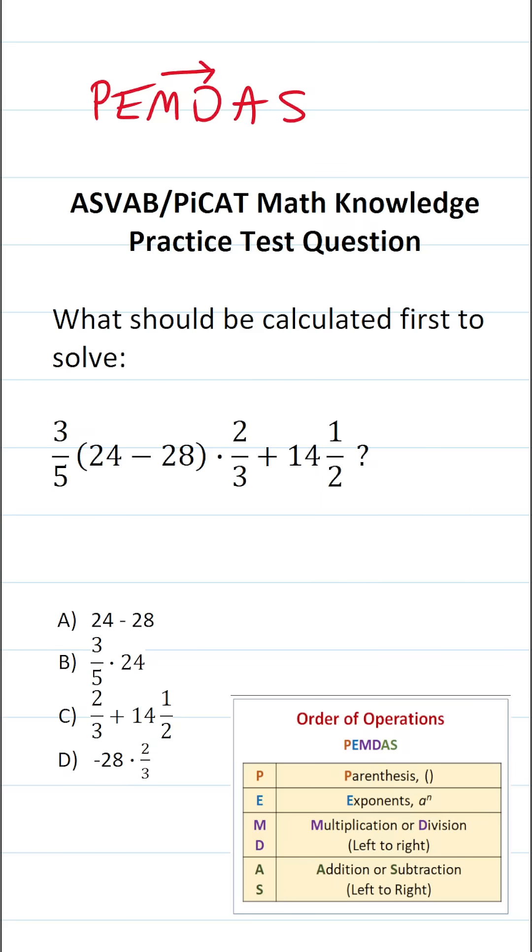then you do multiplication and division as they appear in the expression from left to right, that is to say they're treated as equals,